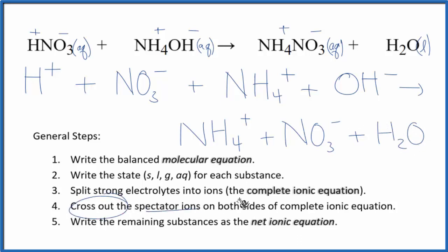Now we can cross out spectator ions. They're on both sides of the complete ionic equation. So I'm looking for things that are the same in the reactants and the products. I see in the reactants have a nitrite ion in the products. Cross it out.